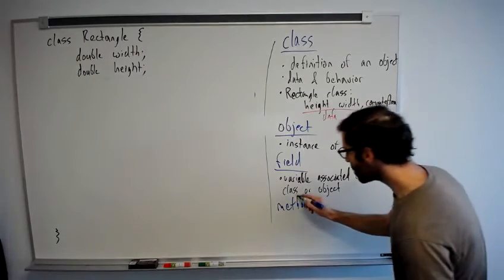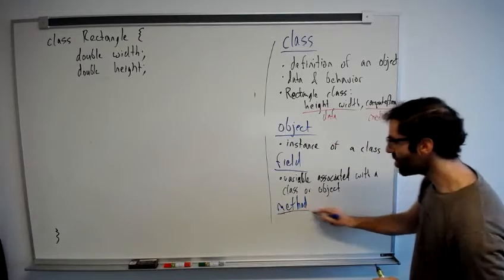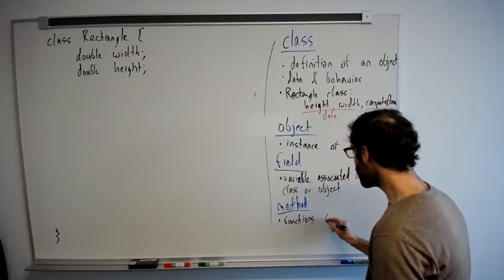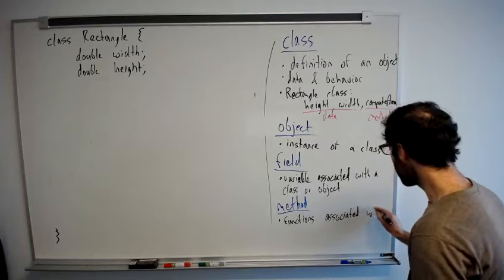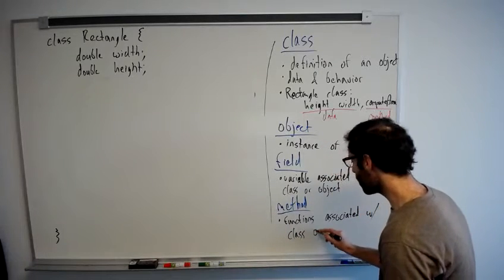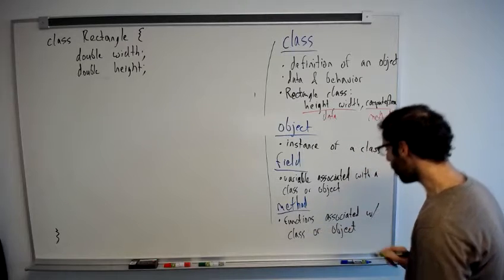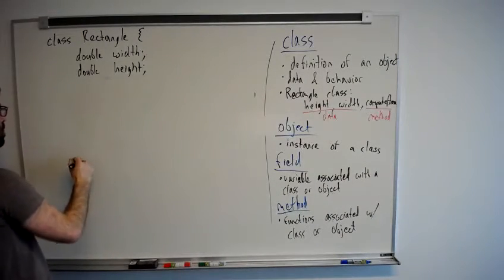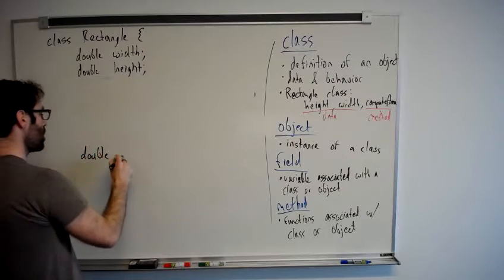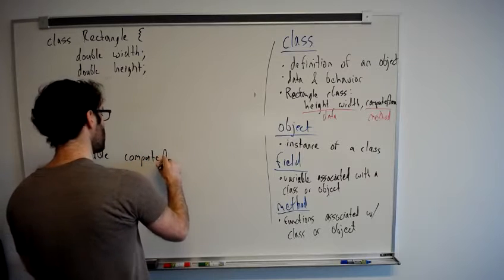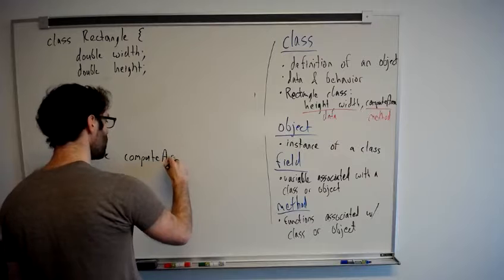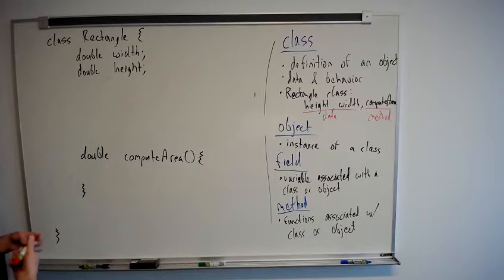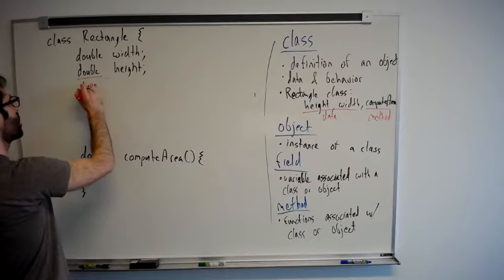And the other part of our class definitions, in addition to data, we have methods. And these are functions associated with a class or object. To continue with the rectangle example, we would have something that looks like this.